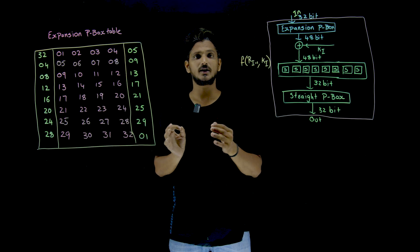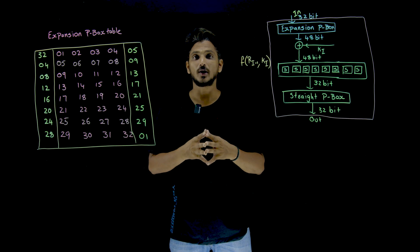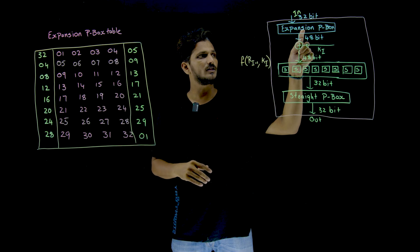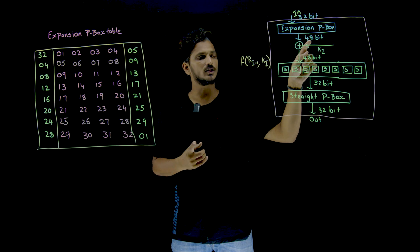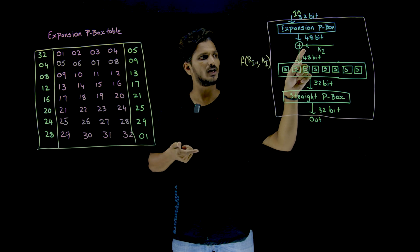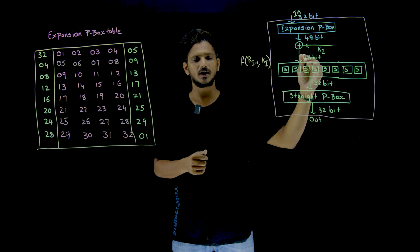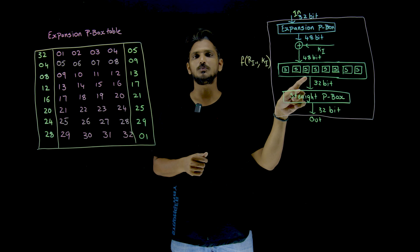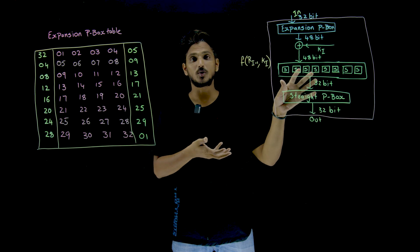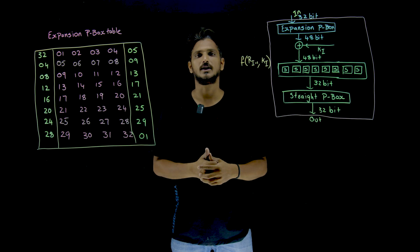If you understand this point, the next class will be very easy to understand. Hope you understand how this expansion P-box is done. After this expansion P-box, you get 48 bits. These 48 bits are XORed with the key, which is 48 bits, and you get an output of 48 bits. This 48-bit result is sent as input to the S-boxes and straight P-box. How the S-boxes and straight P-box work will be discussed in our next class.